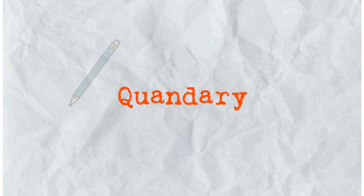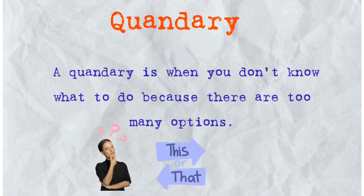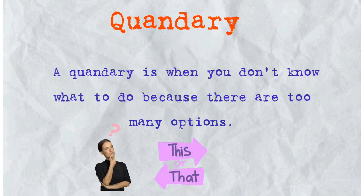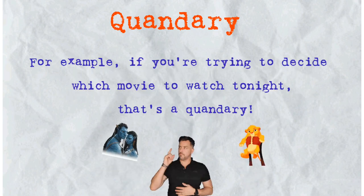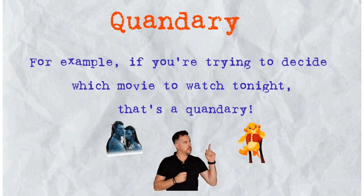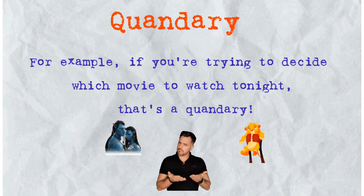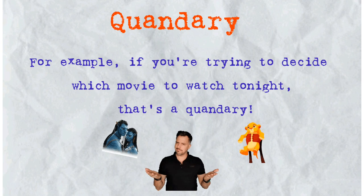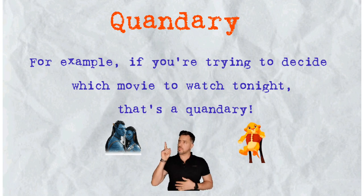The third word is quandary. A quandary is when you don't know what to do because there are too many options. For example, if you're trying to decide which movie to watch tonight, that's a quandary.